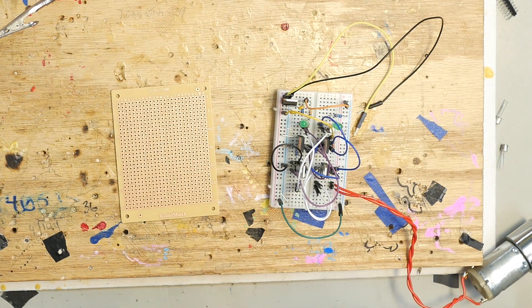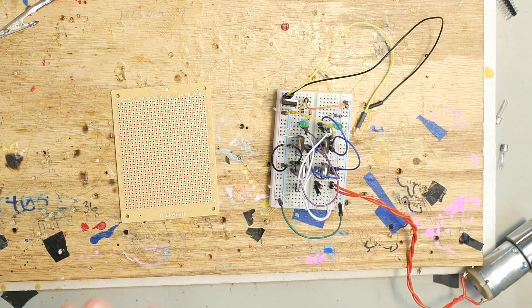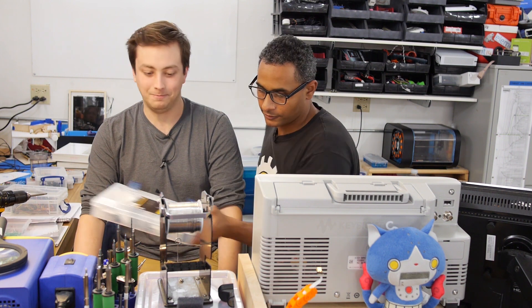Let's move on to the H-bridge. Now here are all the components that we're going to use for the H-bridge that we're making. We have a 2N2222A transistor, we're going to need two of them, and then we have two P-channel MOSFETs, the IRF9630.